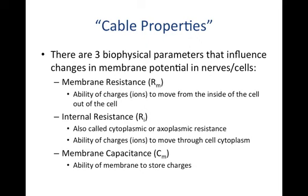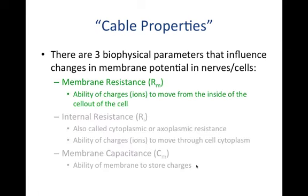These collectively are referred to as cable properties. There are three biophysical parameters that influence changes in membrane potential in nerves and cells. The first cable property is membrane resistance, referring to the ability of ions to move from inside the cell to outside. The second is internal resistance, or R sub I, also called cytoplasmic or axoplasmic resistance, referring to the ability of ions to move through the cell cytoplasm. Finally, membrane capacitance is the ability of the membrane to store charges.